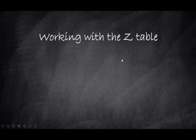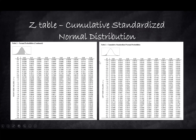Hello, in this example we will see how we work with the Z table to find probabilities. When we standardize a normal distribution to the standard normal distribution curve, we use the Z tables to help us find probabilities. We have two tables: one shows the area under the curve to the left-hand side — we call it the positive number table — and the second table uses negative Z values and also shows the left-hand side area under the curve.